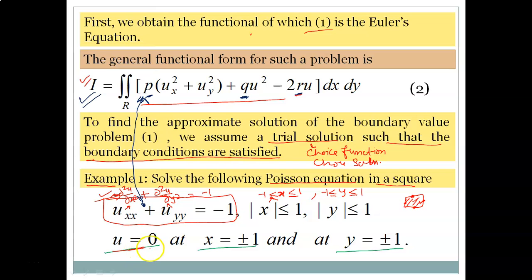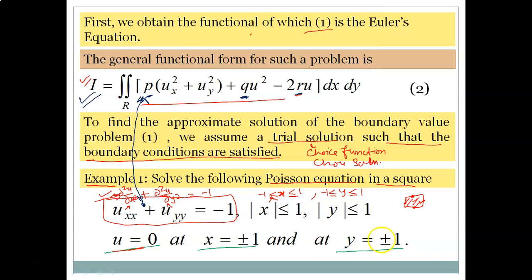The boundary conditions are: u = 0 at x = ±1 for any value of y — meaning on those vertical boundaries the value of u is zero. Similarly, u = 0 at y = ±1 for any value of x — so on all four sides of the square boundary, u equals zero.